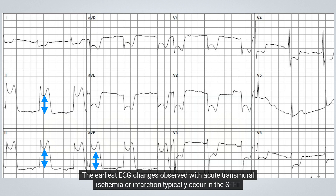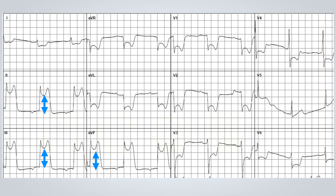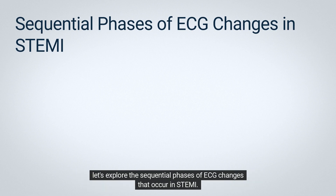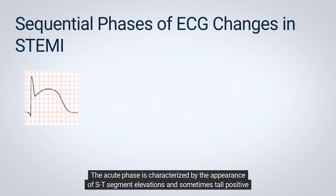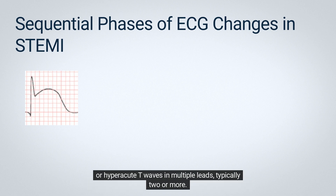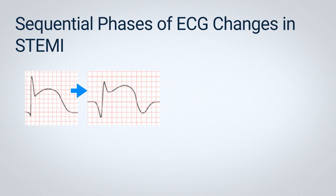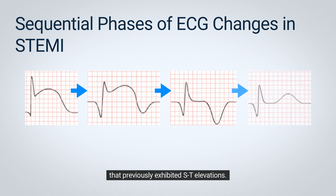The earliest ECG changes observed with acute transmural ischemia or infarction typically occur in the STT complex in sequential phases. There are two main phases. The acute phase is characterized by the appearance of ST-segment elevations and sometimes tall positive or hyperacute T waves in multiple leads, typically two or more — this phase is referred to as STEMI. The evolving phase takes place hours or days later and is marked by deep T wave inversions in the leads that previously exhibited ST elevations.